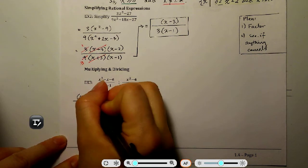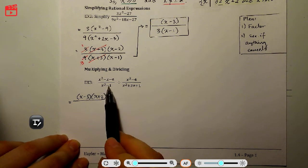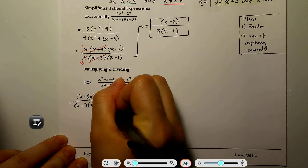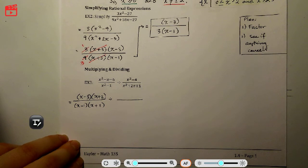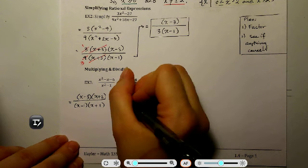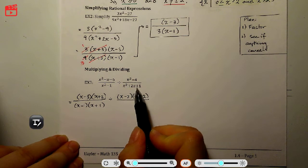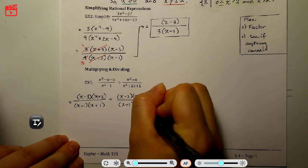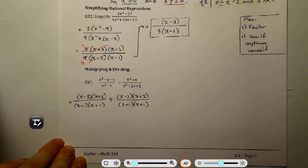Factoring: the first numerator (a trinomial) factors into (x − 3)(x + 2). The first denominator has a difference of squares, factoring into a conjugate pair. For the second fraction, the numerator is also a difference of squares — factoring into a conjugate pair — and the trinomial denominator factors into (x + 1)(x + 1).